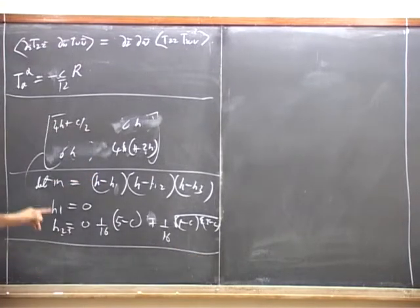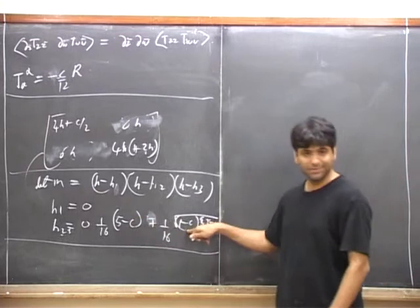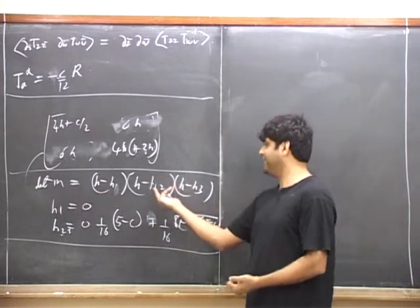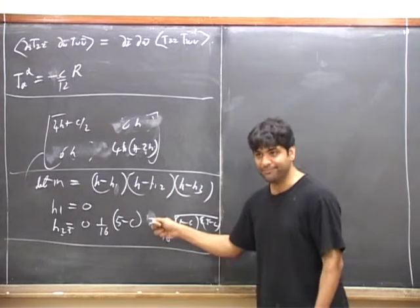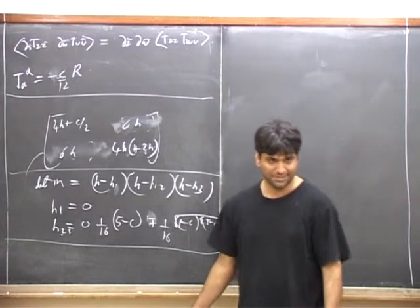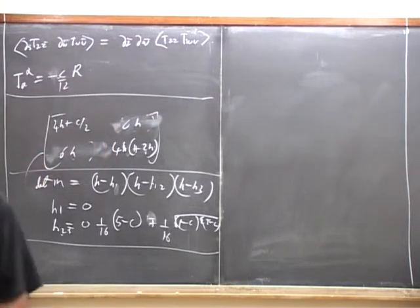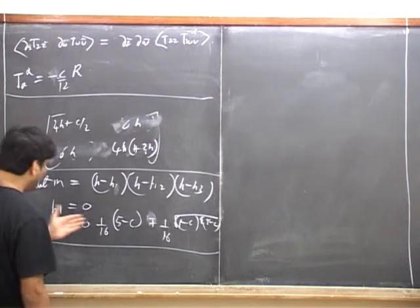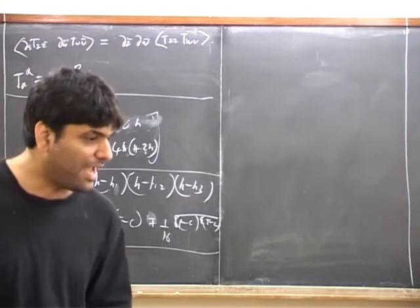The important point is that you see certain values are fine, but the determinant is not always positive. You've got these two different values H_2 and H_3. If H is in between H_2 and H_3, with H greater than 0, then the determinant goes negative. This is the product of three factors, two of which are positive and one negative. If the determinant is negative, it's impossible for all eigenvalues of the matrix to be positive.